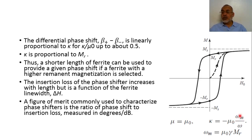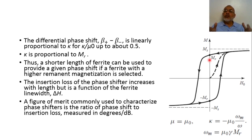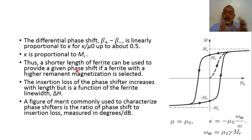This means that the phase difference between the two states is linearly proportional to the remnant magnetization MR. So if we want a phase shifter with a high phase shift, it is better to use a ferrite material with a higher remnant magnetization. Kappa is proportional to MR, so a shorter length of ferrite can be used to provide a given phase shift if a ferrite with higher remnant magnetization is selected.